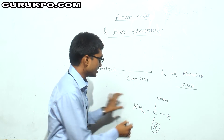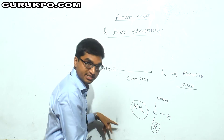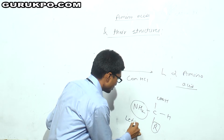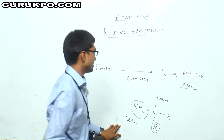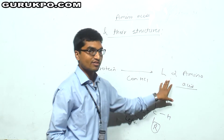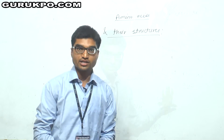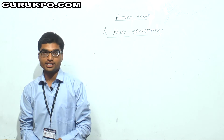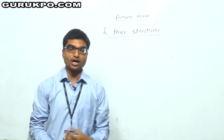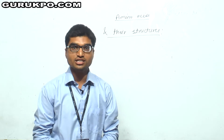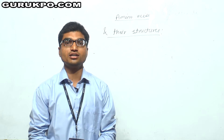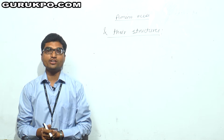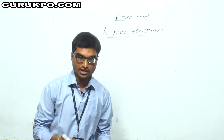When this NH2 group is present on the left side, this is known as L-alpha amino acid. There were 20 different types of amino acids, but nowadays 22 amino acids have been discovered.